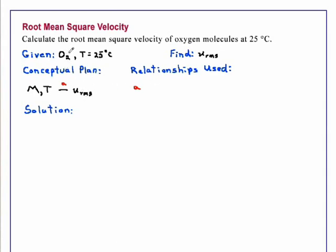We know the molecule and can calculate its molar mass M. We have the temperature, and these are related to the root mean square velocity by the equation: v_rms equals the square root of 3RT divided by M.